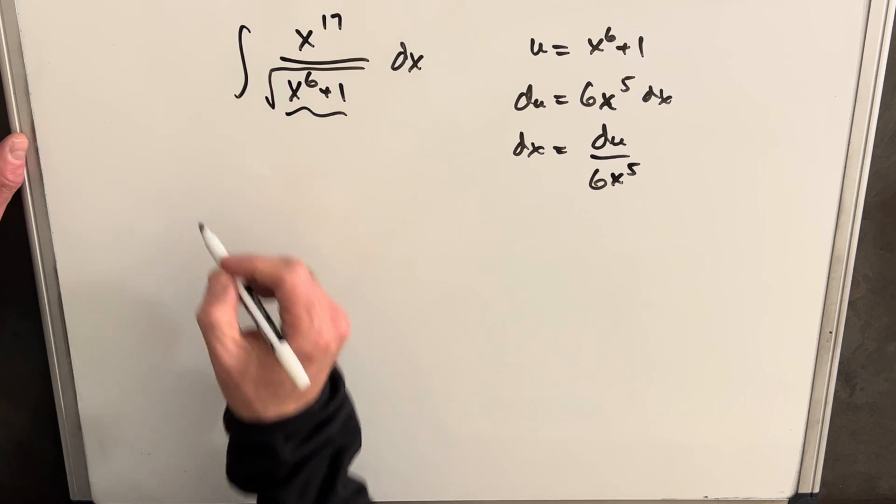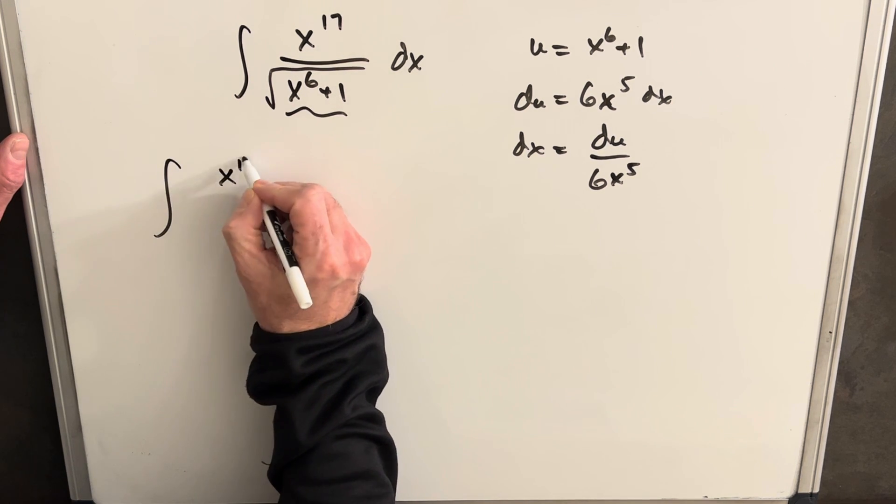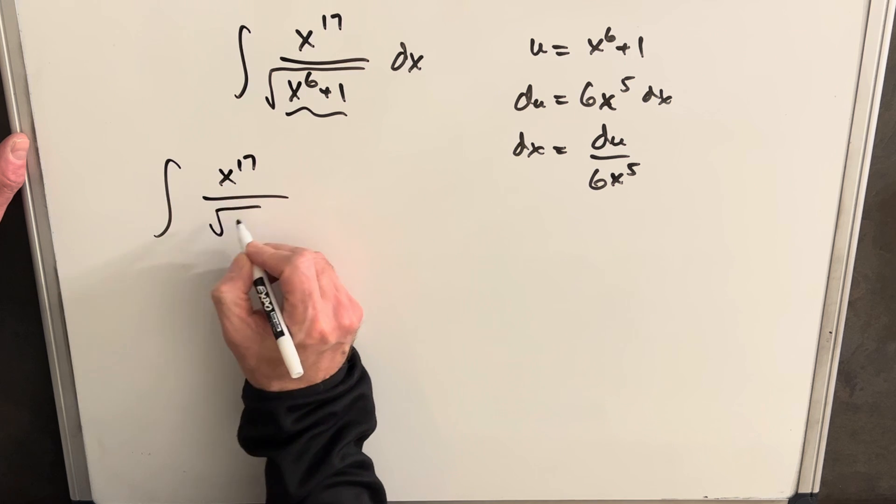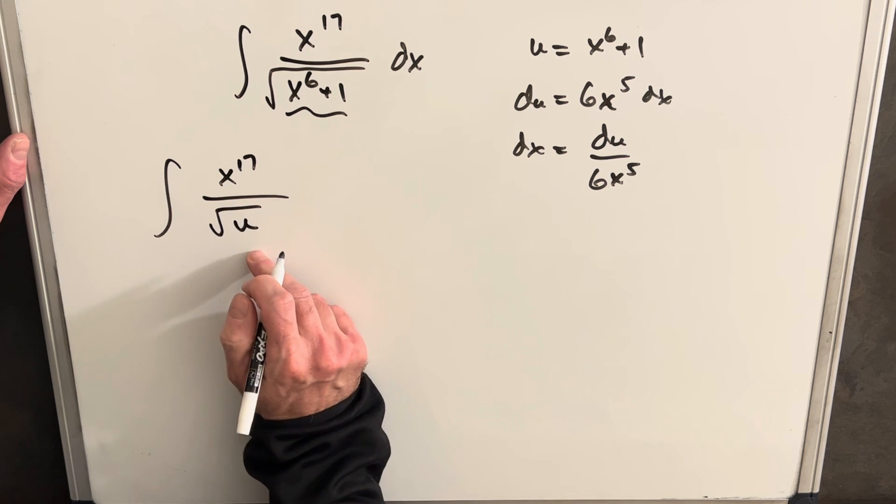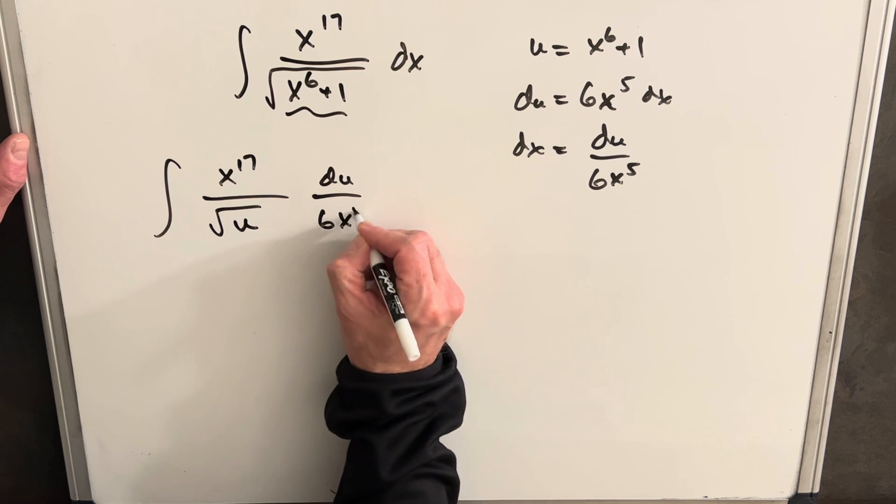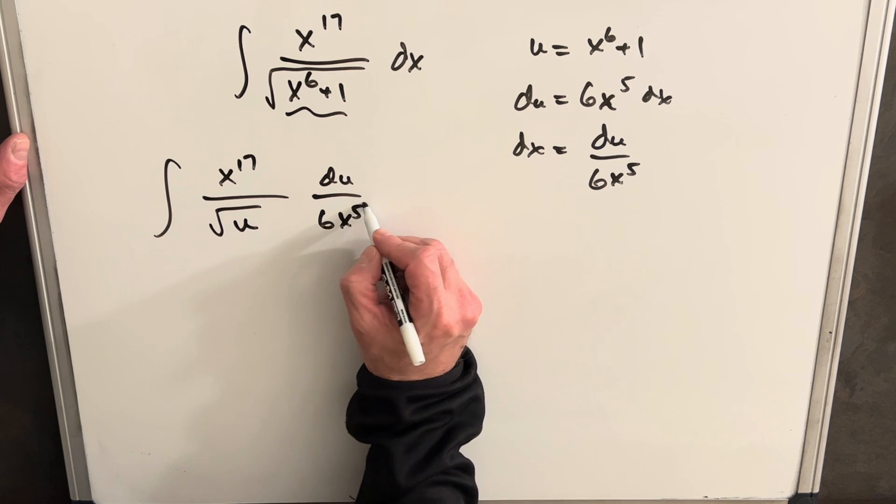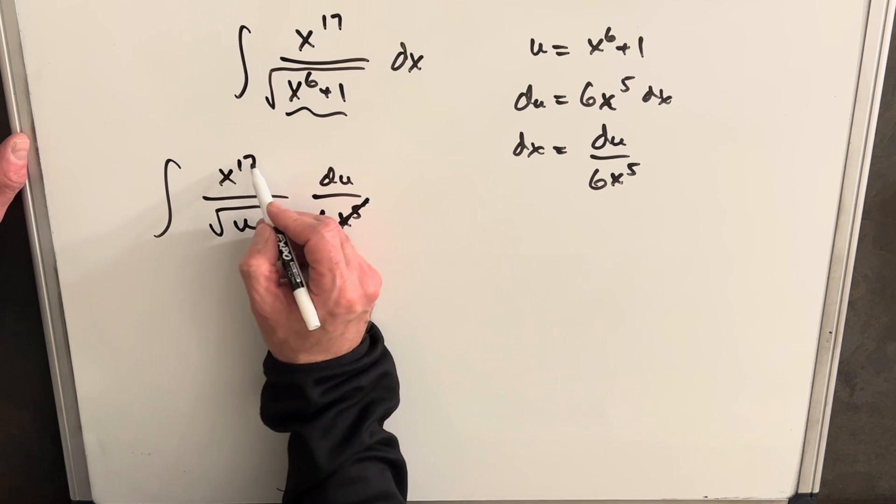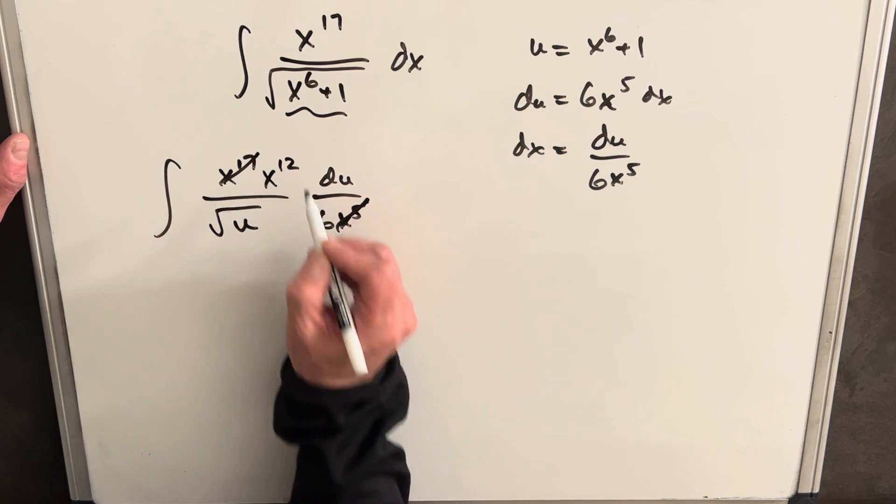Then let's make the substitution. So we're going to have, for now, we'll leave our x to the 17th there, and we'll have a square root of u in the denominator. For our dx, we'll just pop this in 6x to the 5th. I'm going to cancel this x to the 5th out with this, and we're going to have an x to the 12th.